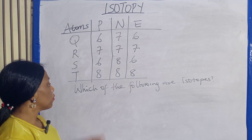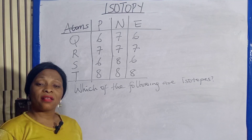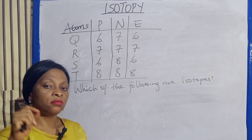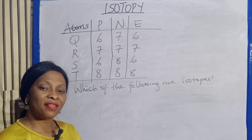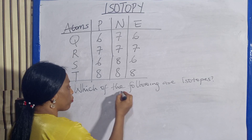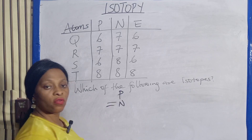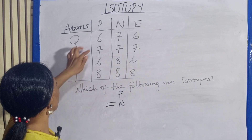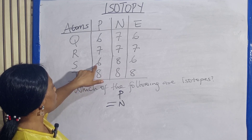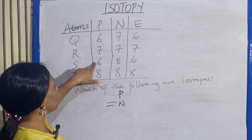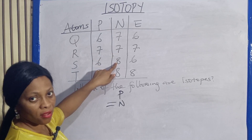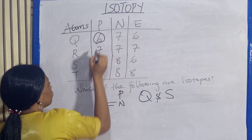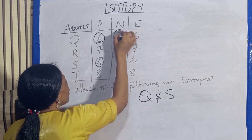Let's look at this question: which of the following are isotopes? Isotopes have the same atomic number — atomic number means proton number — and different neutron number. They have the same number of protons but different number of neutrons. So let's look at the ones that have the same number of protons. Q and S have the same atomic number and different mass number, so Q and S are the isotopes.